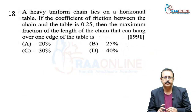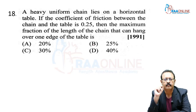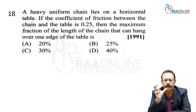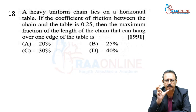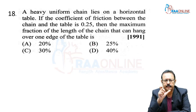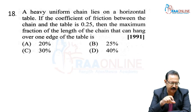Next problem: A heavy uniform chain lies on a horizontal table. If the coefficient of friction between the chain and the table is 0.25, then the maximum fraction of the length of the chain that can hang over one edge of the table is?